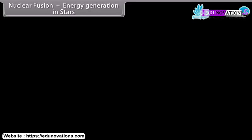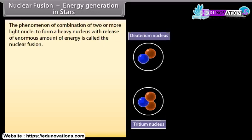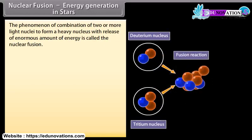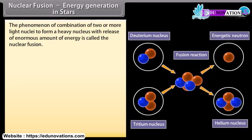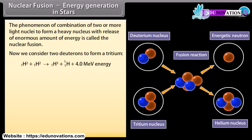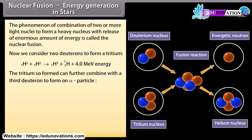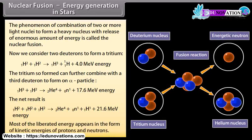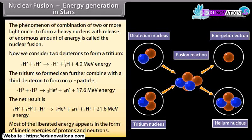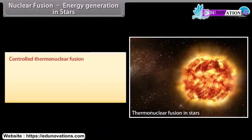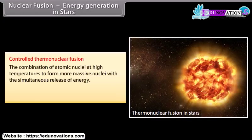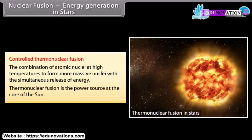Nuclear fusion: The phenomenon of combination of two or more light nuclei to form a heavy nucleus with release of an enormous amount of energy is called nuclear fusion. Two deuterons can combine to form tritium, which can further combine with a third deuteron to form an alpha particle. Most of the liberated energy appears in the form of kinetic energies of protons and neutrons. Controlled thermonuclear fusion — the combination of atomic nuclei at high temperatures to form more massive nuclei with simultaneous release of energy — is the power source at the core of the sun.